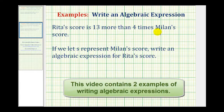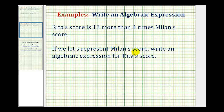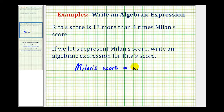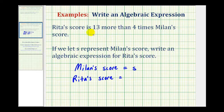Rita's score is thirteen more than four times Milan's score. If we let s represent Milan's score, we want to write an expression for Rita's score. So first we're letting Milan's score equal s. We want an expression for Rita's score, and we're told that Rita's score is thirteen more than four times Milan's score, or thirteen more than four times s.